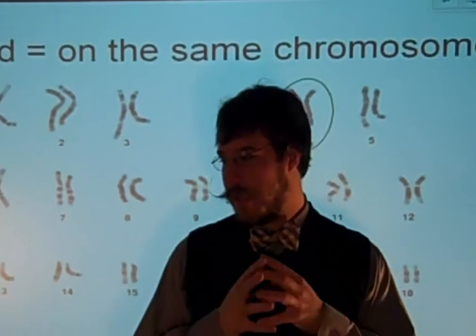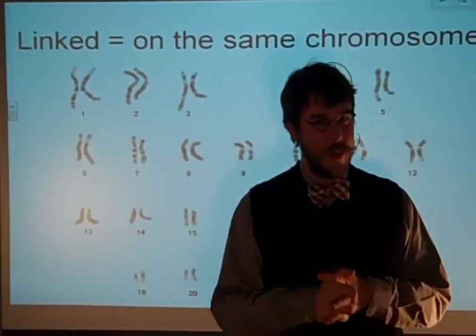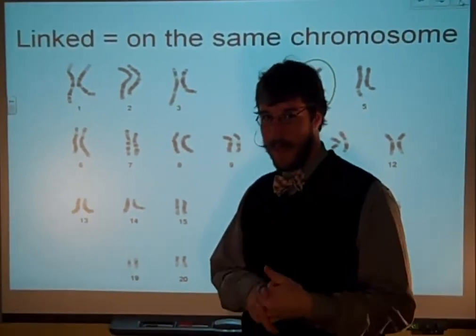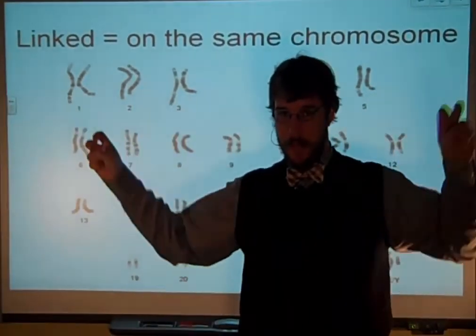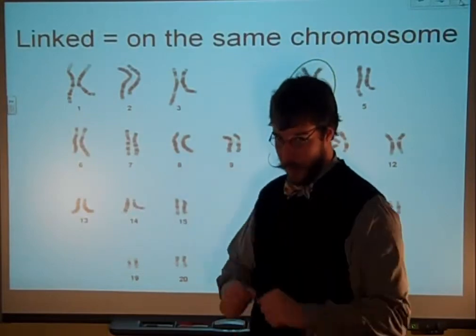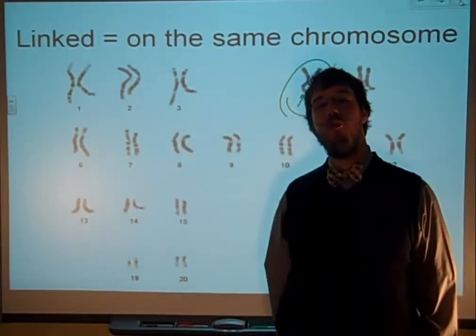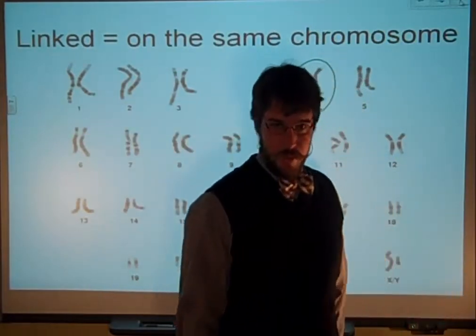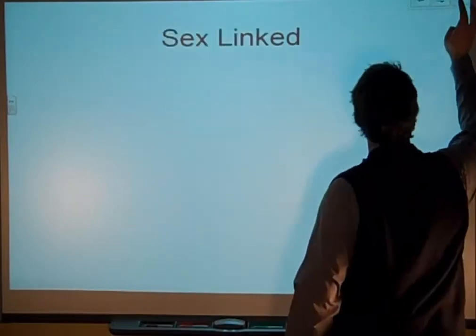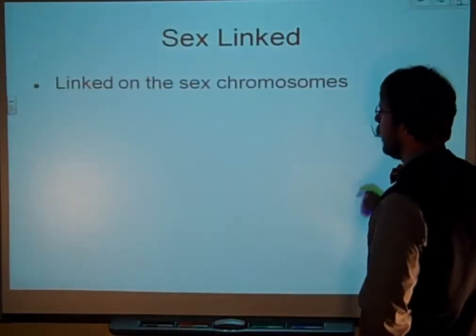So all the traits on chromosome number four, they're all going to go together — they're all going to be linked. That means all the alleles from one side go together, like your brown hair and your right-handedness if those happen to be on the same chromosome. So if you have two traits that are linked together, the rule of independent assortment is gone, because they're linked if they're on the same chromosome.